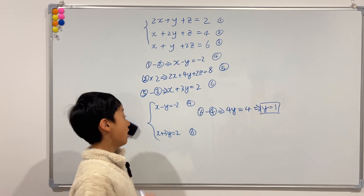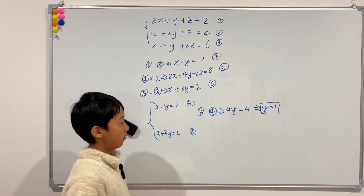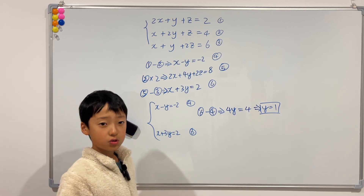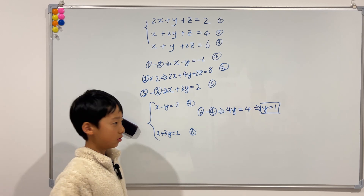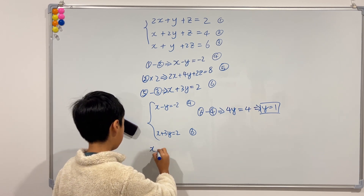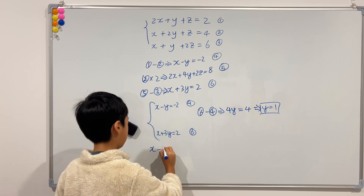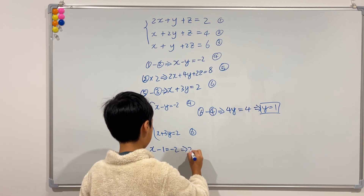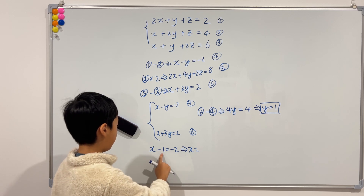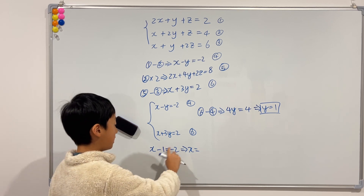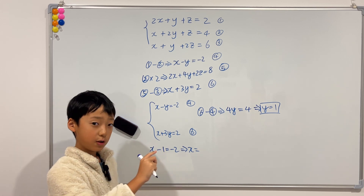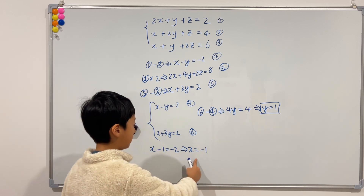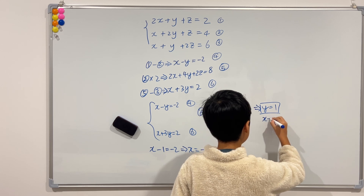Now we know that y is equal to 1. How do we figure out the x value? We can just substitute the value of y back into any of these equations. I'm going to substitute it into equation 4. So we have x minus y, which is just 1, equals negative 2. If we move negative 1 to the right-hand side, we get negative 2 plus 1, which is negative 1. So x is just negative 1.